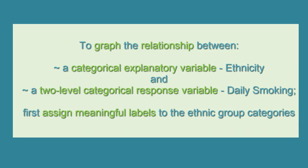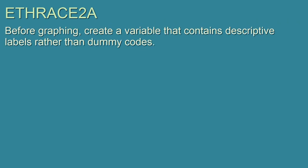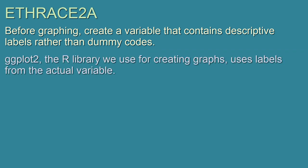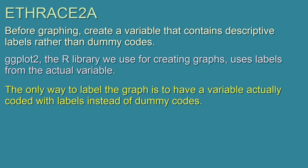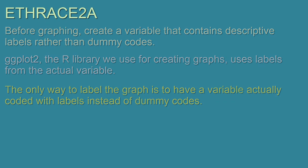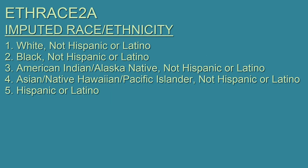To graph the relationship between a categorical explanatory variable — ethnicity — and a two-level categorical response variable — daily smoking — we will first assign meaningful labels to our ethnic group categories. In order to more easily create a descriptive, fully labeled graph, a first step before graphing is to create a variable for S2A that contains descriptive labels instead of dummy codes. When working with the ggplot2 library in R, ggplot2 uses labels from the actual variable, so the only way to label the graph is to have a variable coded with the labels we want. We need to consult the codebook to translate the dummy codes and then perform data management to reassign them as descriptive labels.